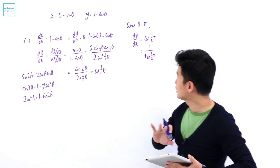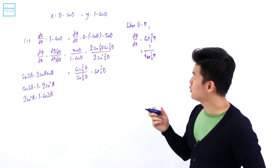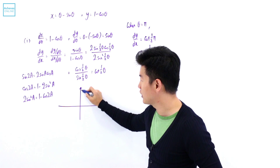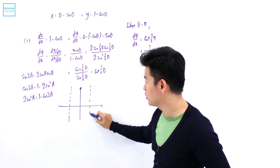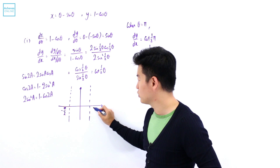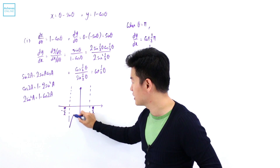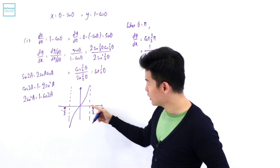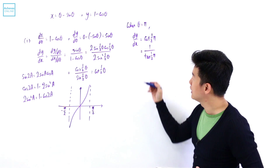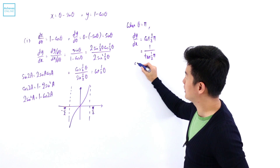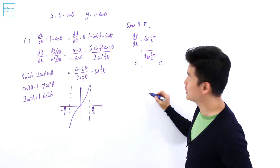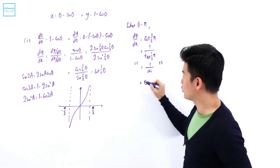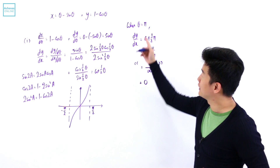Tangent of half pi is going to be undefined. You can try your calculator, or we can analyze it on the graph of tangent. Tangent has two vertical asymptotes at minus pi over 2 and pi over 2, and at pi over 2 it shoots up to positive infinity. So this is like 1 over positive infinity, which means dy/dx is actually going to become 0 when theta equals pi.